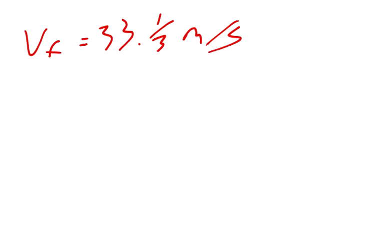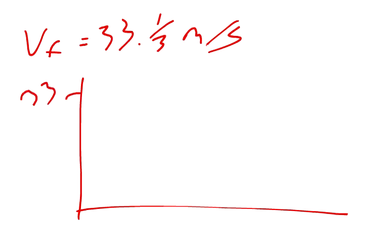The problem asks what minimum constant acceleration does the aircraft require if it is to be airborne after a takeoff run of 270 meters. We know the final velocity is 33 meters per second. The initial velocity VI is 0.